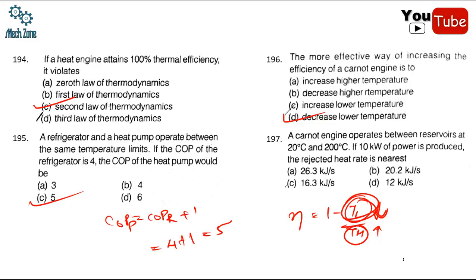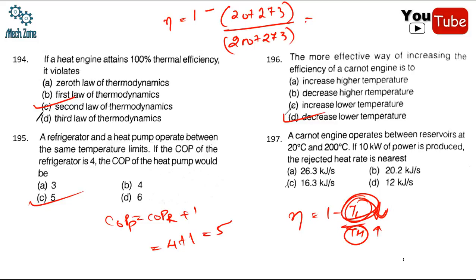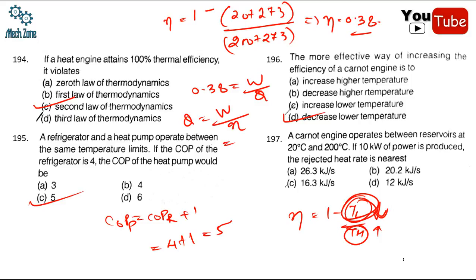A Carnot engine operates between 20°C (293 K) and 200°C (473 K). If 10 kilowatt power is produced, find heat rejected. Efficiency = 1 - 293/473 ≈ 0.38. Efficiency = W/Q_added, so Q_added = W/η = 10/0.38 = 26.27 kW. Therefore Q_rejected = Q_added - W = 26.27 - 10 = 16.27 kW ≈ 26.3 kW total heat absorbed.